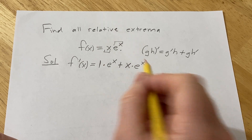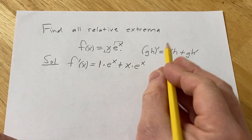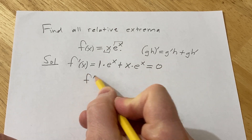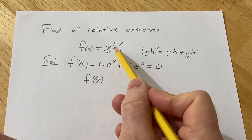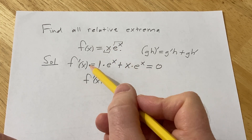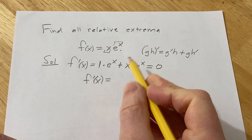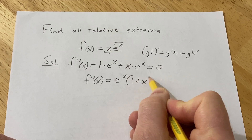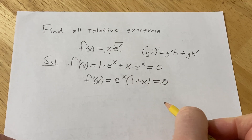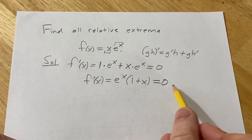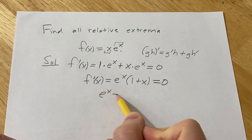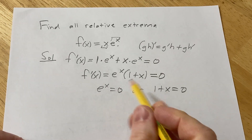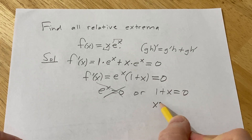This is not undefined, so we just need to find where it's equal to zero. We'll set it equal to zero — we're looking for critical numbers, which are numbers in the domain of the original function where the derivative is either undefined or equal to zero. We can factor out e to the x to get e to the x times (1 + x) equals zero. Since e to the x is never zero, we get x equals negative one.